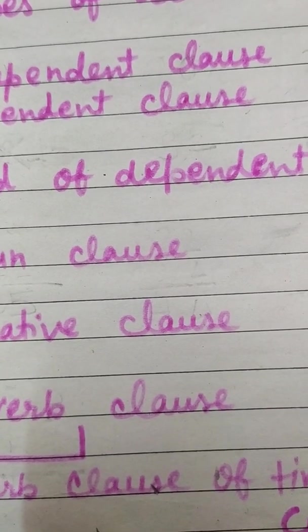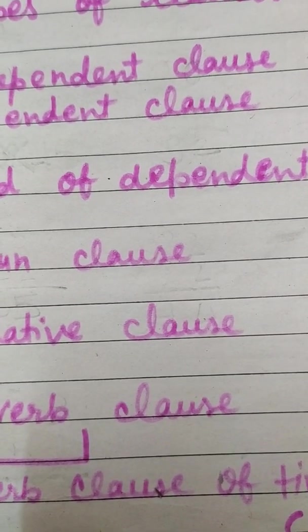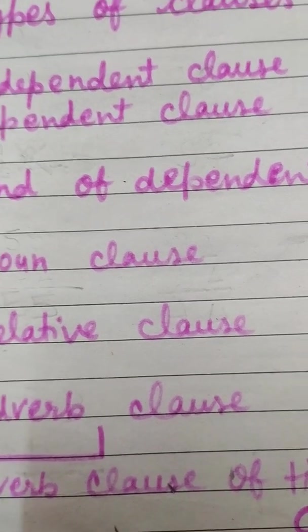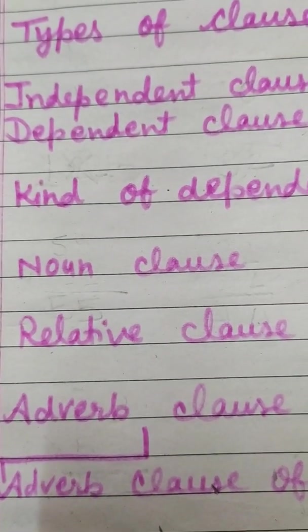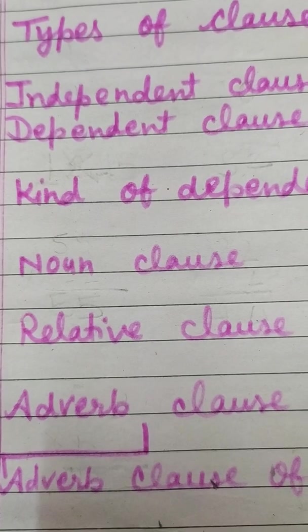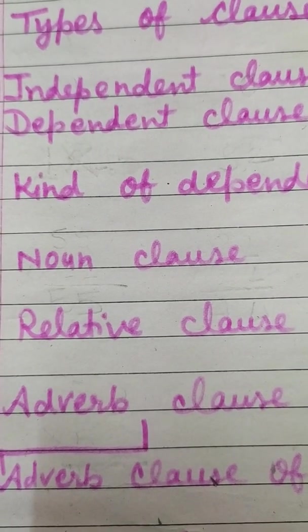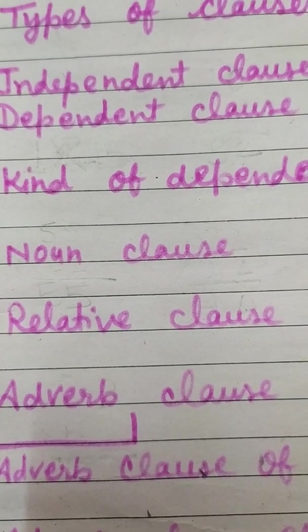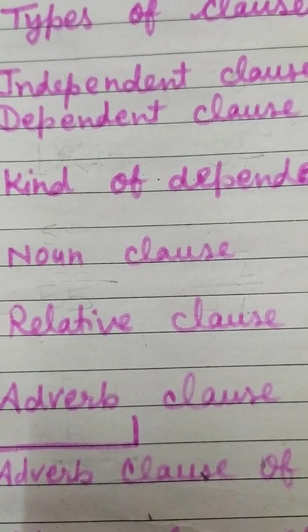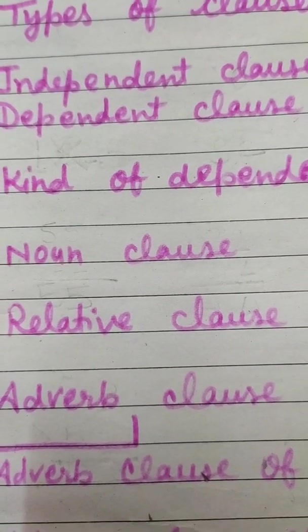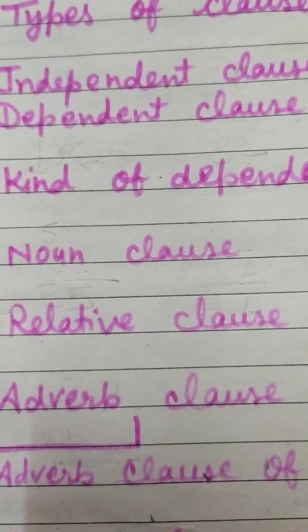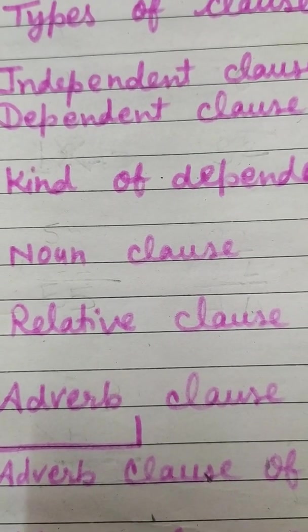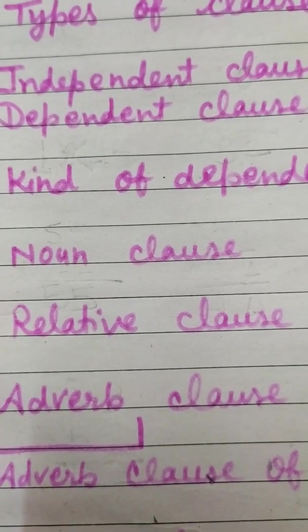For example: 'They work in a factory whose owner is cruel.' Here, 'whose owner is cruel' is the relative clause — it refers to the owner and describes a quality, that is, cruel. This means the owner is cruel. So this is a relative clause, also called an adjective clause.